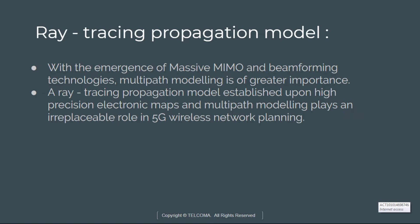However, due to the lack of multipath information at a high level of granularity, the accuracy of network planning is hard to guarantee. A ray tracing propagation model, which is established upon high precision electronic maps, includes multipath modeling which plays an important role in 5G wireless network planning.